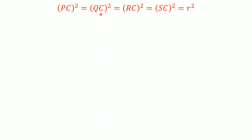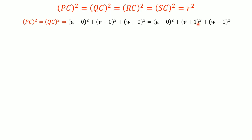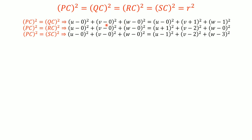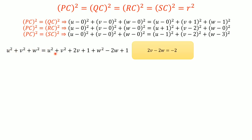Comparing the first two terms, we get an equation. From PC² = RC² we get another equation. Opening all the brackets, we note that u² + v² + w² appears on both sides and cancels. We get the simplified equation: 2u − 4w = −2.